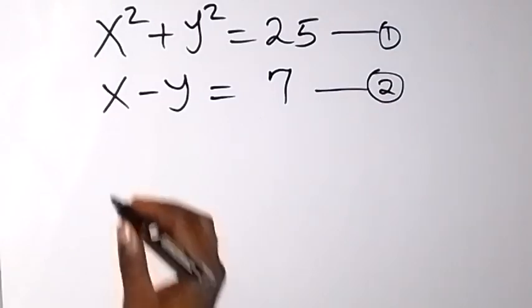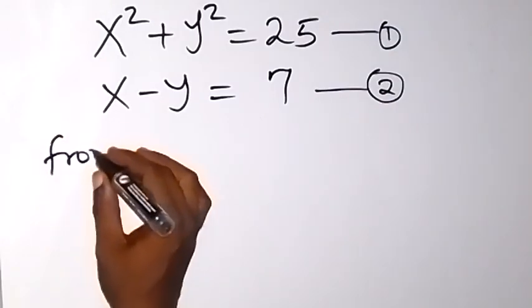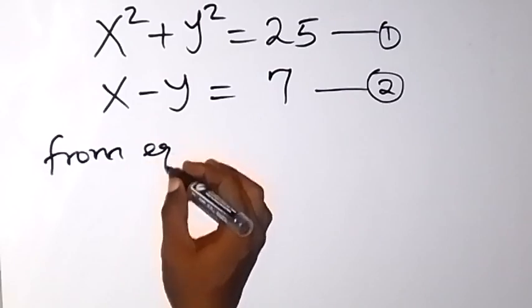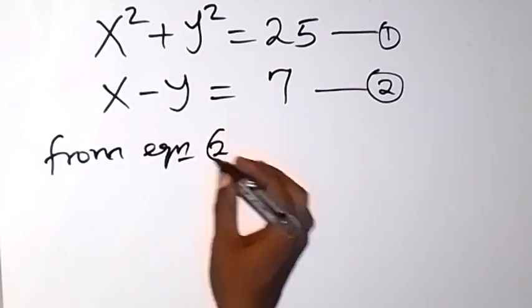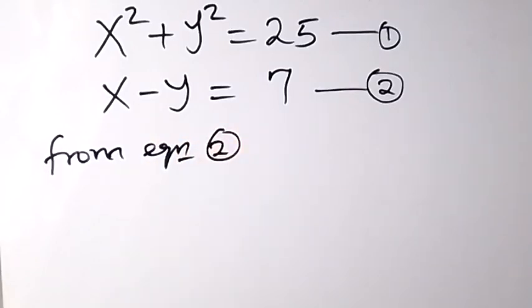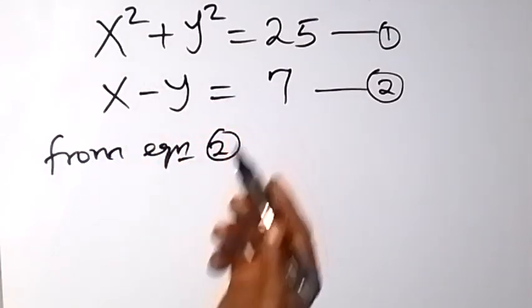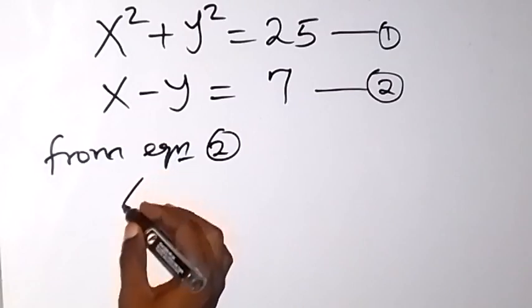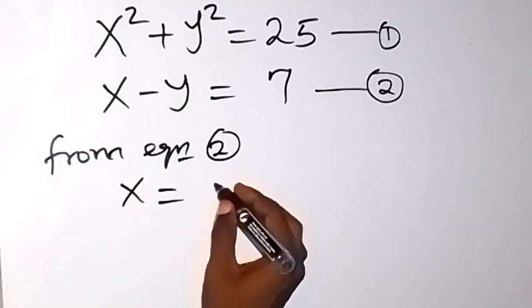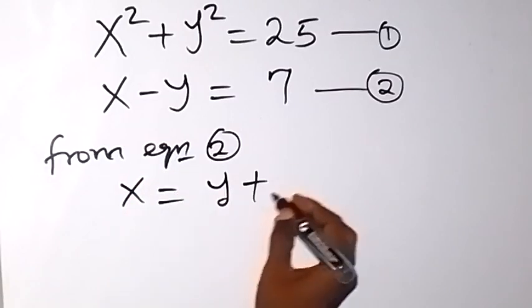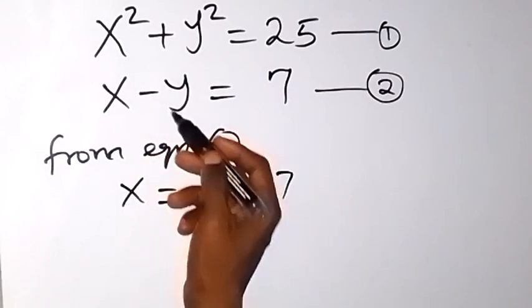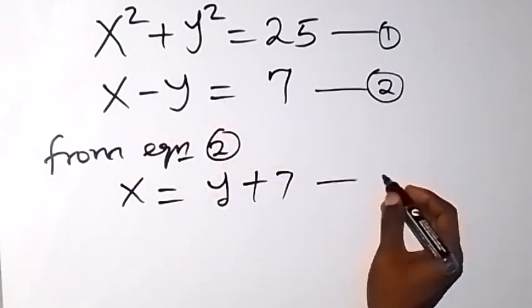From equation 2, let's make x the subject. We take minus y here, it counts as plus. So we can write it as x equals y plus 7. Minus y has become plus y. Let's call this equation 3.